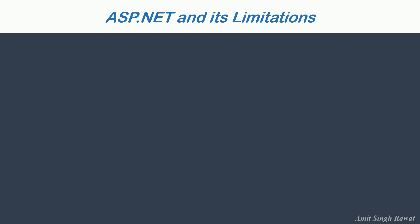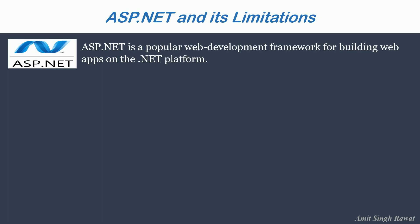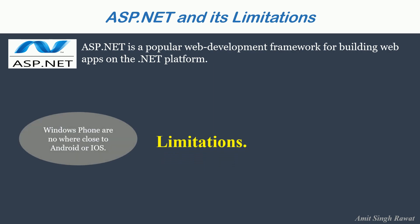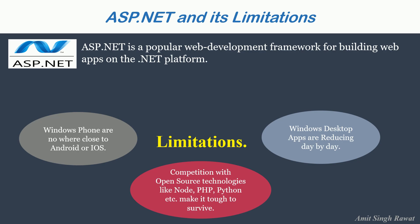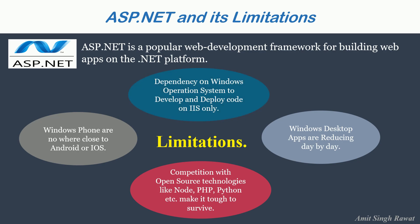Let's continue our discussion with ASP.NET and its limitations. ASP.NET is still a popular web development framework for building web apps on the .NET platform. But what are the limitations? Windows Phone is nowhere close to Android or iOS. Windows desktop apps are reducing day by day, and this is no longer hidden news. Competition with open source technologies like Node, PHP, Python, etc. makes it tough to survive. The biggest weakness of ASP.NET is its dependency on Windows operating system — you can only develop and deploy code on IIS.